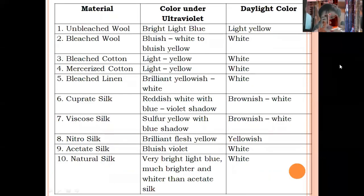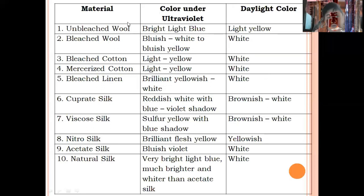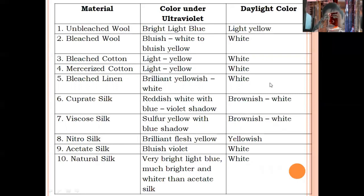The fluorescence test is used to determine the general group to which a fiber belongs, though it is not reliable for positive identification. In general, vegetable fibers exhibit yellow fluorescence under ultraviolet light, whereas animal fibers show bluish fluorescence. For example, bleached wool appears bright light blue under UV and light blue in daylight; unbleached wool appears bright light blue under UV and light yellow in daylight; bleached cotton appears bluish-white to bluish-yellow under UV and white in daylight.